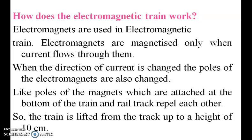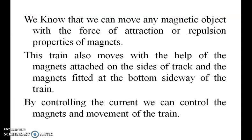How does the electromagnetic train work? Electromagnets are used in the maglev train. When the direction of the current is changed, the poles of the electromagnet also change. Like poles of the magnet attached at the bottom of the train and the track repel each other, so the train lifts from the track up to a height of 10 cm. The train also moves with the help of magnets attached on the sides of the track.